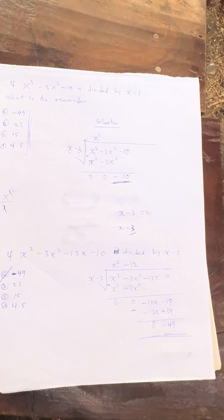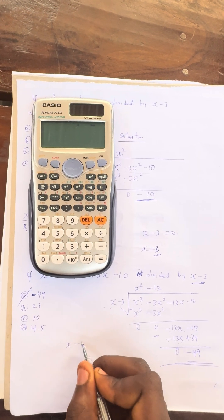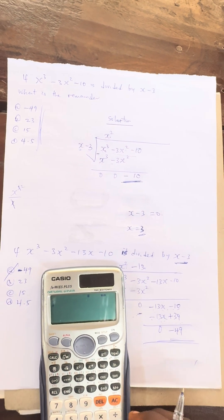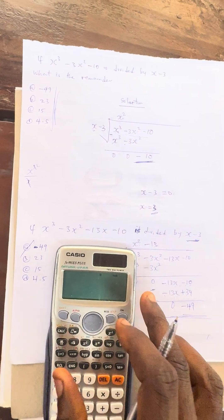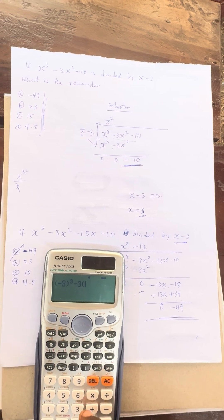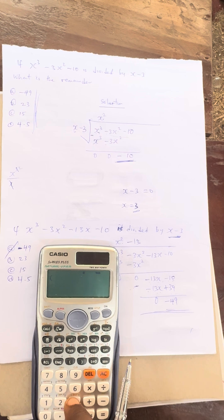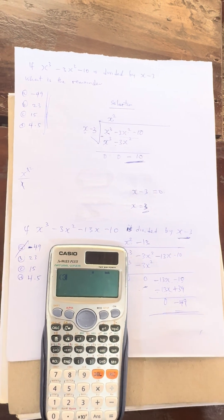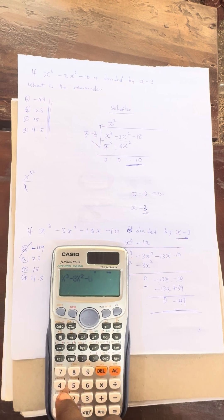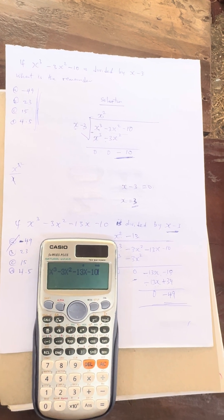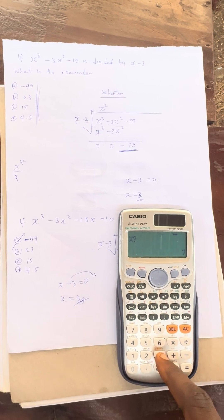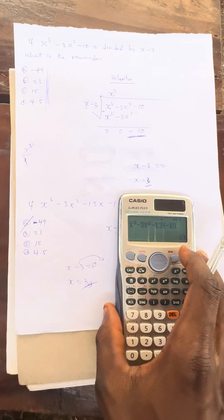Now if you want to use your calculator to solve as well: take x minus 3 and equate it to 0, so x equals 3. Substitute x equals 3 into the expression: press x raised by 3, minus 3 alpha x raised by 2, minus 13 alpha x, minus 10. Press calculate — the calculator will ask for the value of x. Input 3 and press equals. The answer is minus 49.